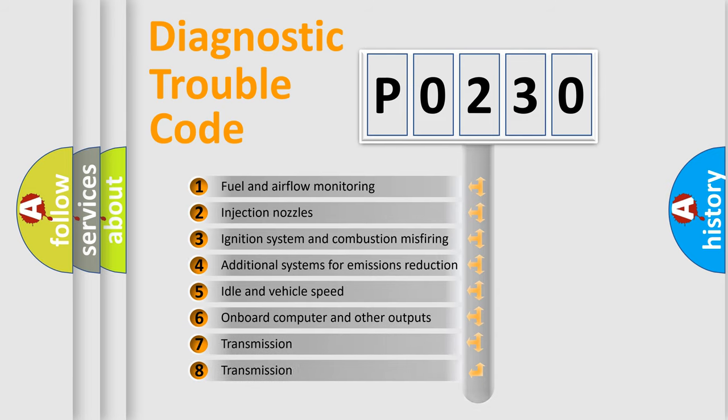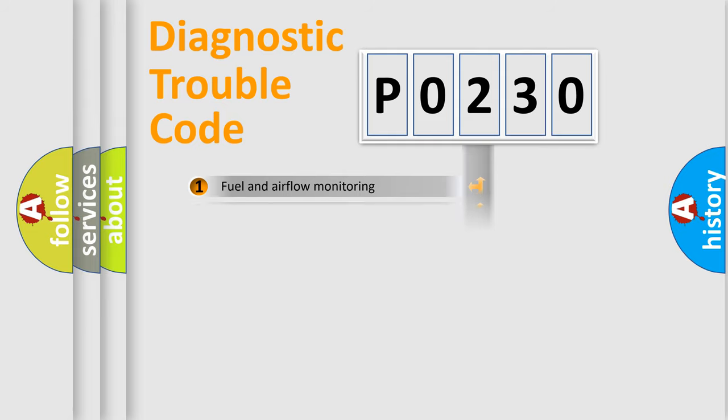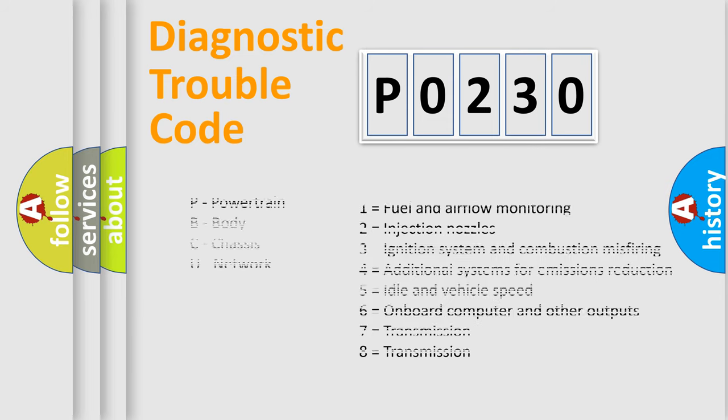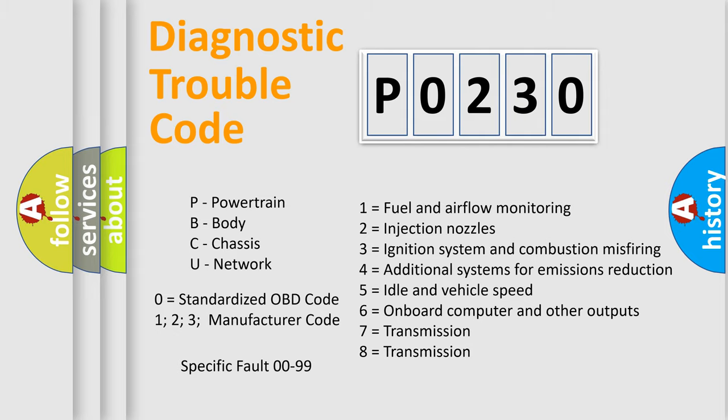The distribution shown is valid only for the standardized DTC code. Only the last two characters define the specific fault of the group. Let's not forget that such a division is valid only if the second character code is expressed by the number zero.